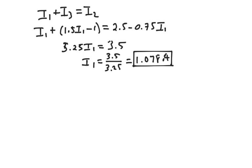That's my I1. And just for fun, let's find the other currents. I2 is equal to 2.5 minus 0.75 times I1. I1 is 1.078. So, what does that give me? 1.69 amps.